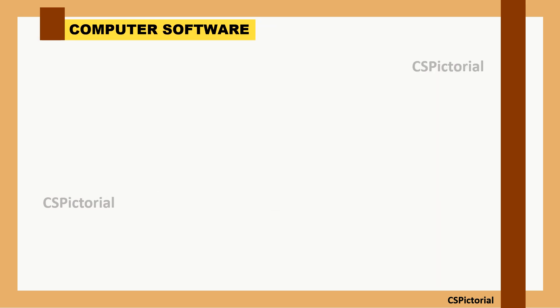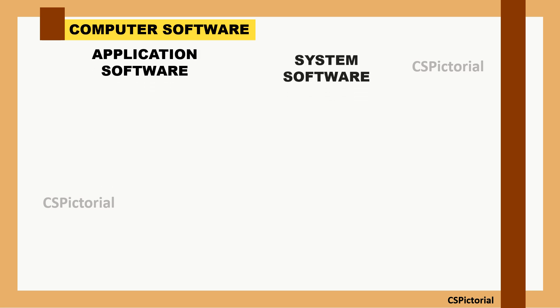Computer software can be divided into two categories: application software and system software. Let us try to understand how application software and system software work.